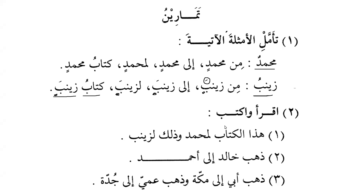Now we focus on the nouns that are Mamnoo min as-Sarf - the diptotes. Hadhaal-kitabu li Muhammadin - this book is for Muhammad. Wa dhalika li Zainab-a - the ending of Zainab will be Li Zainab-a with Fatha, because it will not accept Kasra as it is Mamnoo min as-Sarf. Dhahaba Khalidun ila Ahmad - Khalid went to Ahmad. The ending of Ahmad is Ahmada, because Ahmad is on the pattern of Af'alu, and a noun on the pattern of Af'alu does not accept Kasra, so it is Mamnoo min as-Sarf.